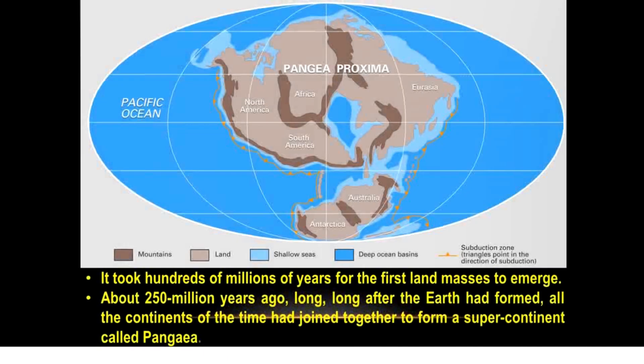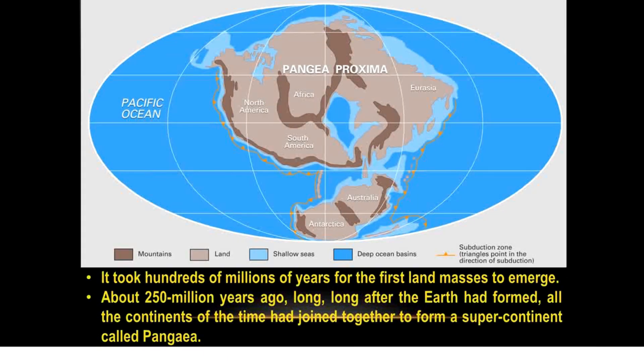Clouds began to develop as water vapour collected in the air, and then it began to pour with rain, causing the early oceans to rise up. It took hundreds of millions of years for the first land masses to emerge.